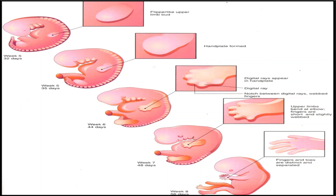From these diagrams, you can see the bud of the upper limb and the bud for the lower limb at day 32. At day 35 it elongates. What promotes the elongation of the limbs is the apical ectodermal ridge that covers the mesenchymal cells of the limbs. At day 44 the upper limb is developing digits, and the lower limb has also elongated. By day 56 it has fully developed, with fingers and toes.